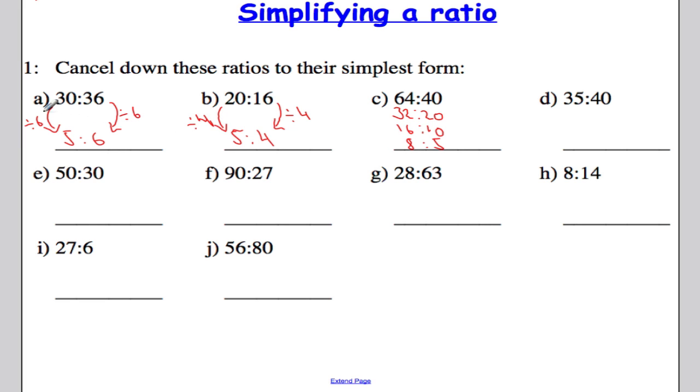So we don't have to do it in one step all the time. We can cancel it down gradually and get to our final answer. Now, I know that the biggest number that divides both into 8 and 5 is actually 1, so I cannot go any further.